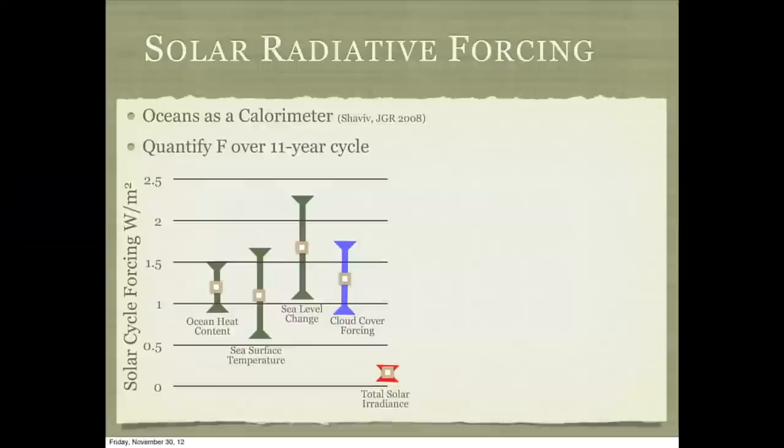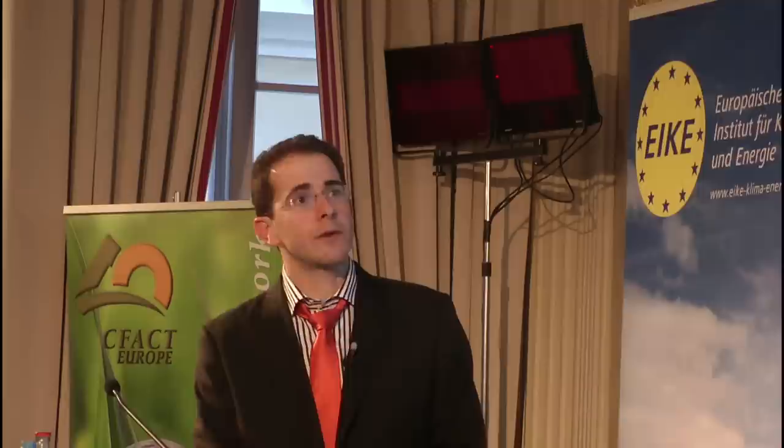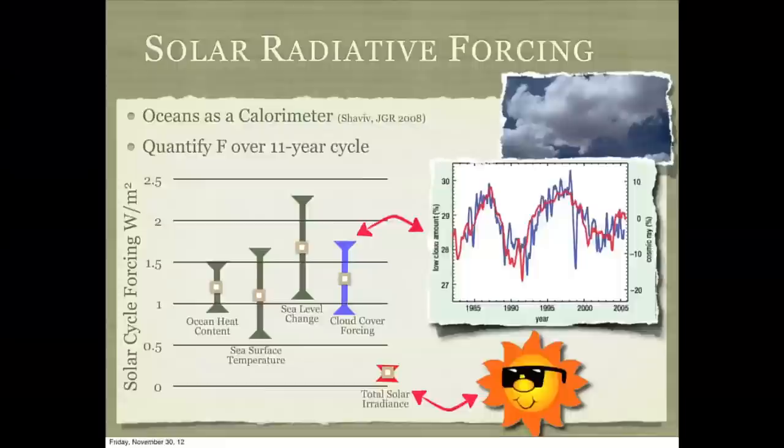Using several datasets — tide gauges, sea surface temperature, ocean heat content with buoy data — you can estimate the change in radiative forcing due to cloud cover changes over the 11-year solar cycle. In all cases you get roughly a little more than one watt per square meter. For comparison, this is the radiative forcing related to total solar irradiance. So when someone from the IPCC says they take solar activity into account, they mean they take this small irradiance term — they don't take the real effect that the sun has on climate.